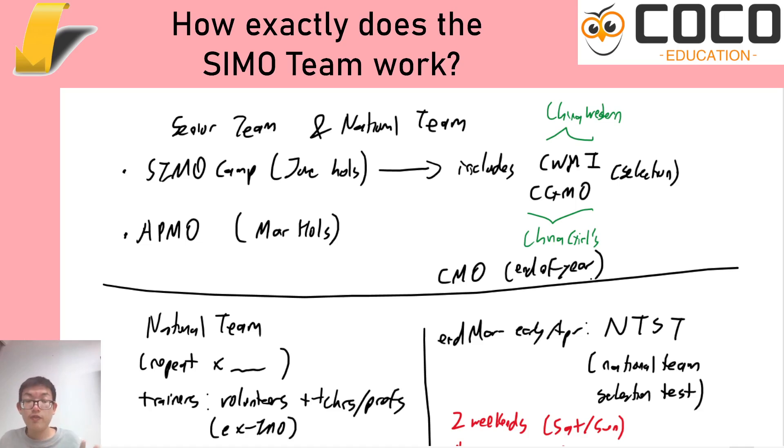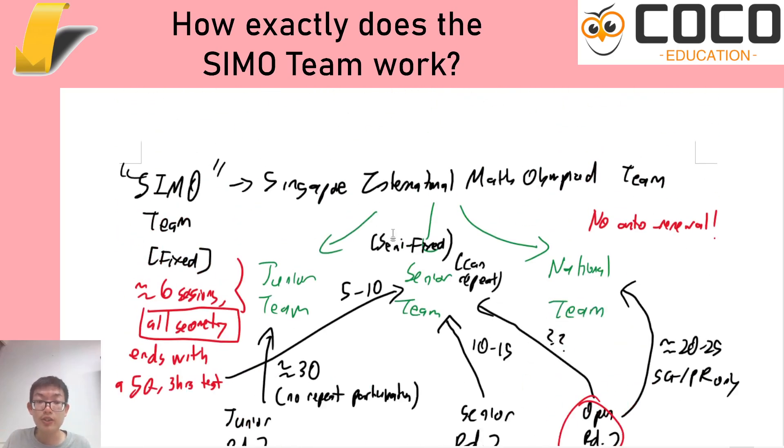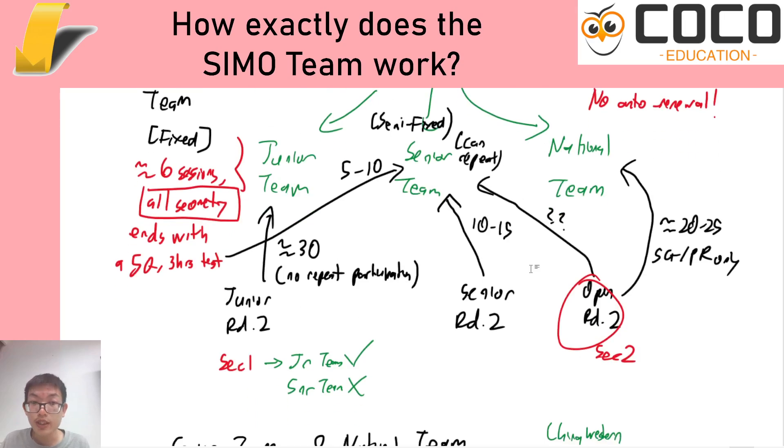Now this sounds like a lot, right? So for those of you who are in the SIMO team right now, you kind of know all of this already, and maybe you are going to correct me in the comment section below. But for everyone else, I just want you to have a glimpse at what's going on. Understand that there are many layers to how our Olympiad setup is like. The SMO is just the first step, because when we talk about the junior, senior, and open round two, that is obviously the round ones that are leading into it.